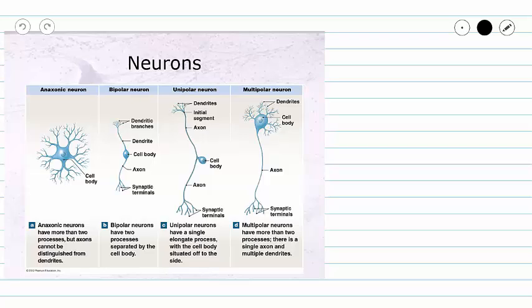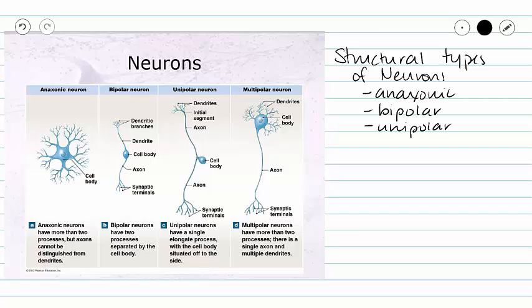This lecture will be a continuation of our lecture series about the nervous system, and the topic will be different neuron structures. Here we have four different structural types of neurons: anaxonic neurons, bipolar neurons, unipolar neurons, and multipolar neurons. We're going to look at each of these individually.